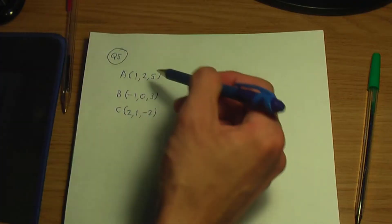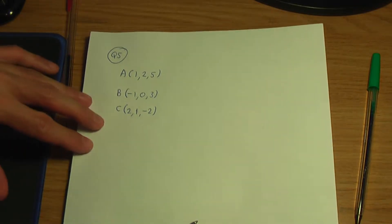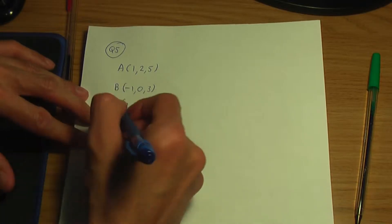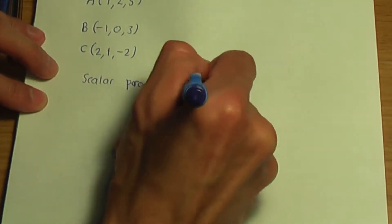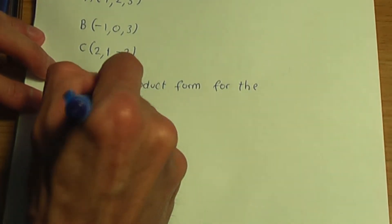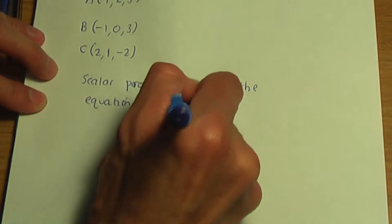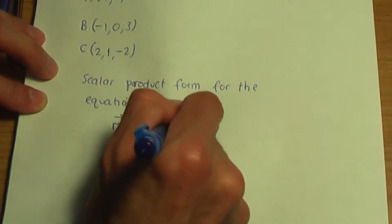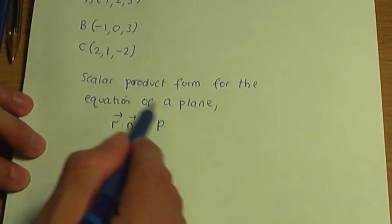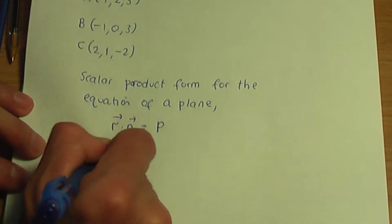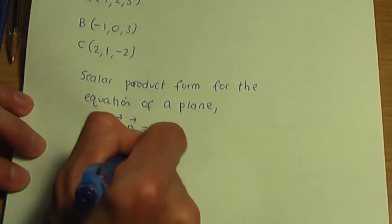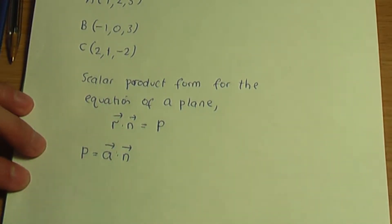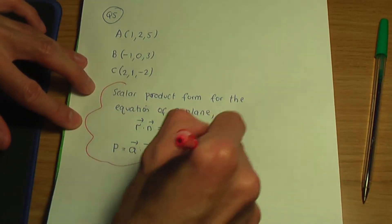Let's go back to the paper and pen. We have the coordinates of A, B, and C. In order to work out the equation of the plane, here's the formula in scalar product form: R dot N equals P, where N is the normal vector of the plane. P, the scalar on the right-hand side, can be found by calculating the scalar product of a fixed point on the plane — so A dot N, where N is the normal vector. It's worthwhile learning this result.